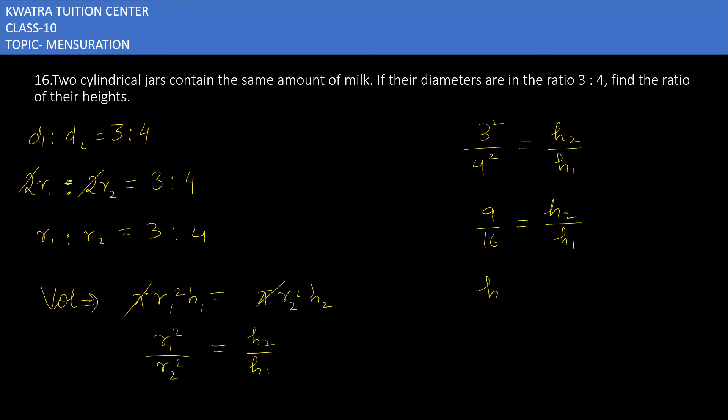But we need h1 over h2, so take the reciprocal. It will give you 16:9. So the ratio of their heights will be 16:9. Yes, this is the answer, and this is the 16th question.